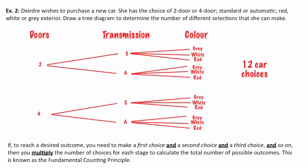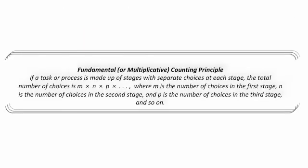Now, if to reach a desired outcome we need to make a first choice, a second choice, a third choice, and so on, we multiply the number of choices at each stage to calculate the total number of outcomes. This is called the fundamental counting principle. In this case, we had two choices in stage one, two choices in stage two, and three choices in stage three. Two times two times three is 12. That's the fundamental counting principle, which is very helpful when our situation becomes too big for tree diagrams.